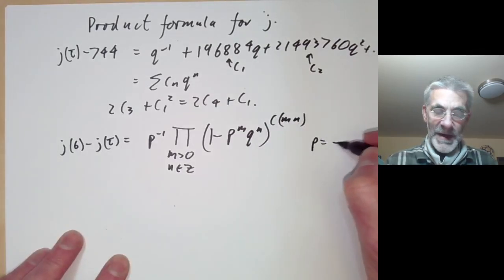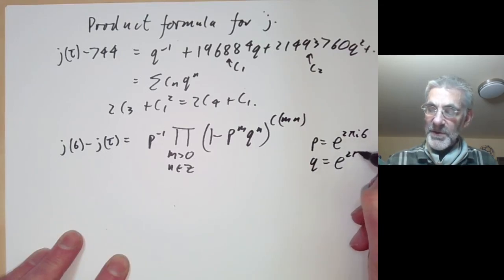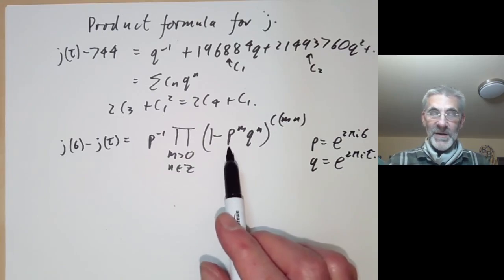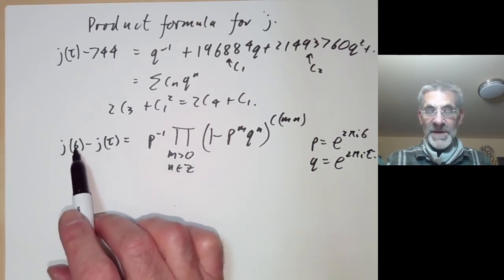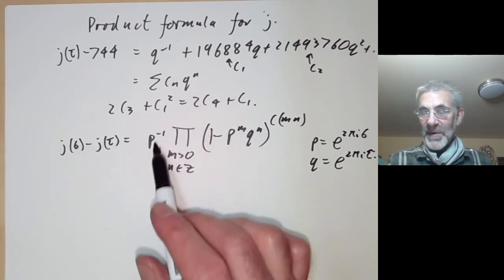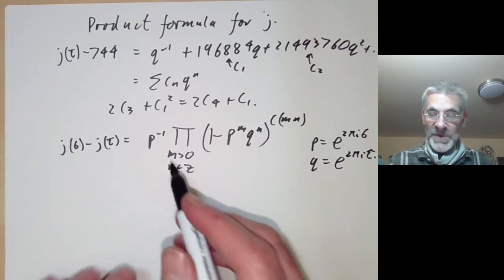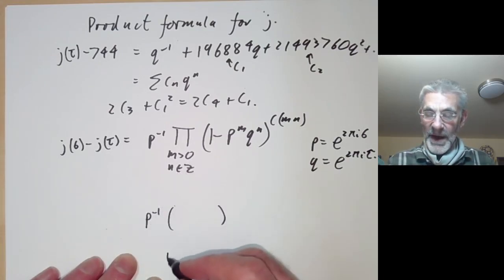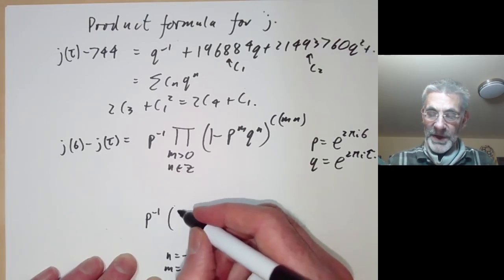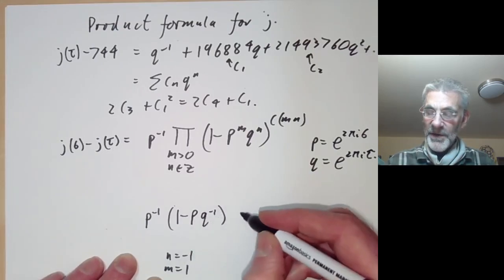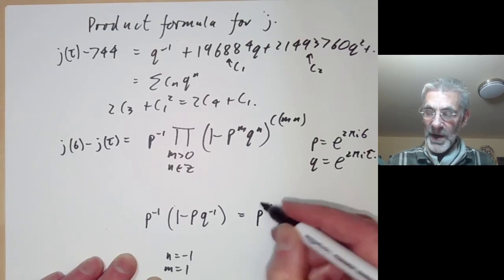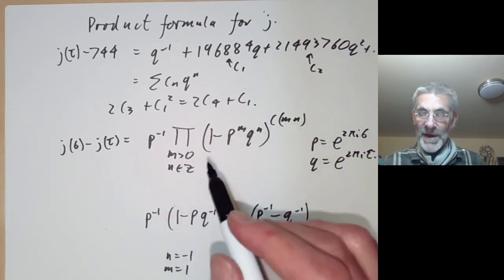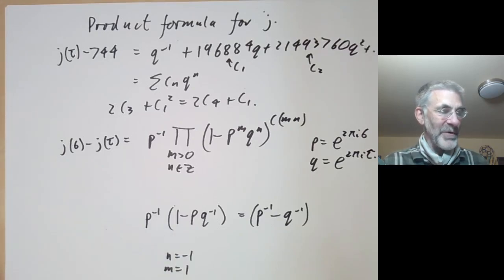Here p = e^{2πiσ} and q = e^{2πiτ}. When you first look at this formula you may think it's obviously wrong, because on the left-hand side we have something that's anti-symmetric in σ and τ, and on the right-hand side we have something that doesn't seem to be anti-symmetric at all in p and q. But notice we have p^{-1} and then a term for n = -1, m = 1 which looks like (1 - pq^{-1}) = p^{-1} - q^{-1}, which really is anti-symmetric, and all remaining terms are symmetric in p and q.